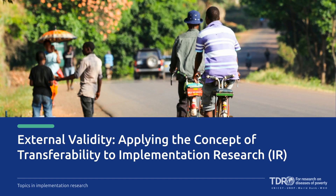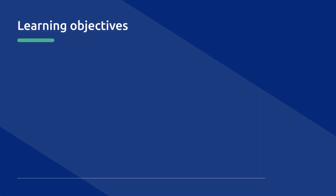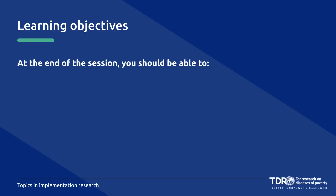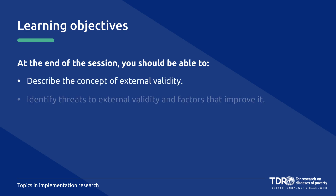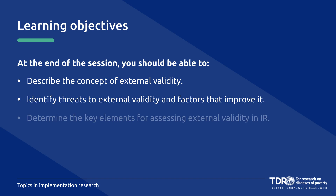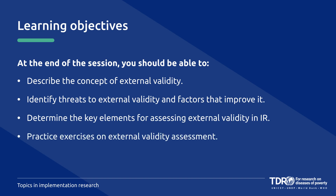Welcome to Chapter 7 of our course. This chapter covers how to apply the concept of external validity, or transferability, to implementation research. After this chapter, you will be able to describe the concept of external validity, identify threats to external validity and factors that promote it, determine the key elements for assessing external validity in implementation research, and we will also do a few practice exercises on assessing external validity.